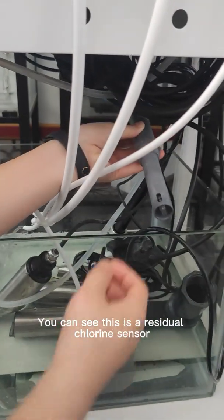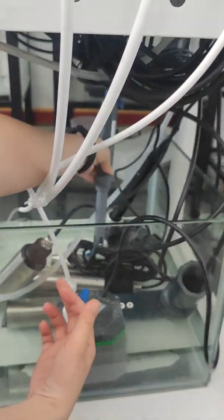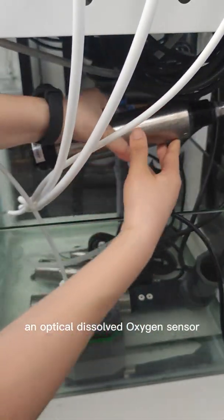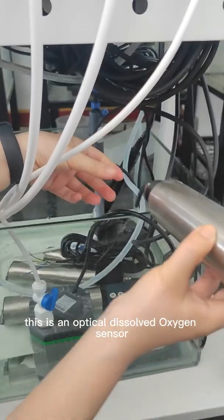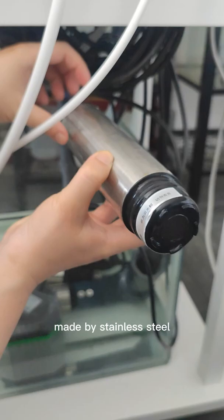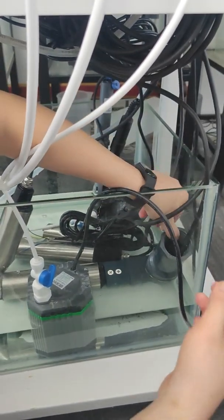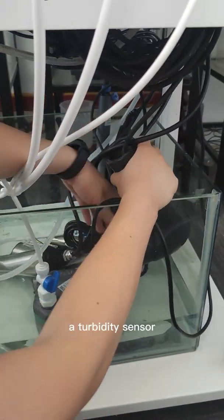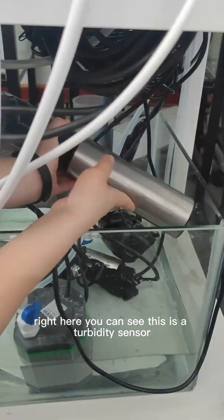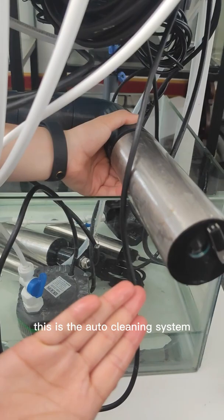You can see this is a residual chlorine sensor under testing and an optical dissolved oxygen sensor. This is an optical dissolved oxygen sensor made by stainless steel material. And this is a turbidity sensor right here. You can see this is a turbidity sensor with an auto-cleaning system.